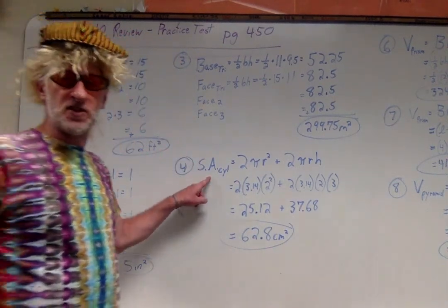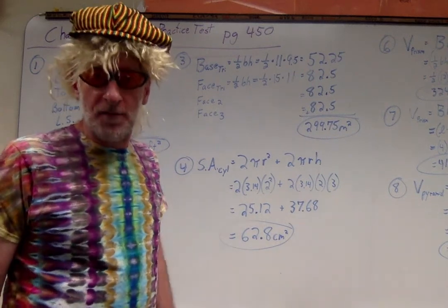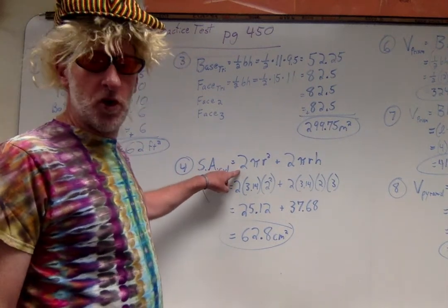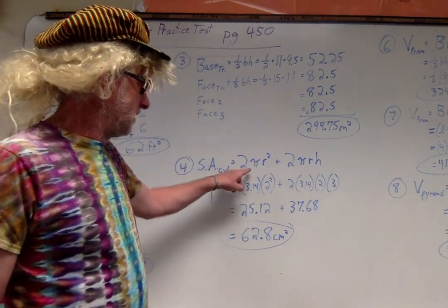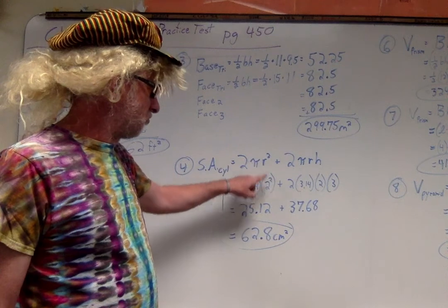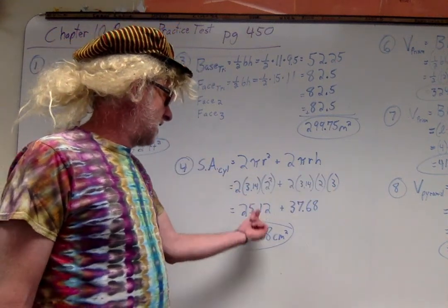How about number four everybody. Now we got to find the surface area of a cylinder. Bust out that cheat sheet, look at that formula sheet, copy down the formula. That's how you start your problem. And then do what it tells you to do. Replace pi with 3.14, the radius was a 2, the height must have been a 3. I do the multiplication everybody: 62.8 centimeters squared.